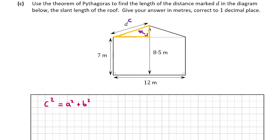Before marking in a and b, let's work out the base and height of the yellow triangle. From the previous part we know the triangle's height is 1.5 meters. The base is 6 meters — half the full base of the rectangle which is 12 meters — since the yellow triangle spans half the base. So a = 6 and b = 1.5, giving us d² = 6² + 1.5².